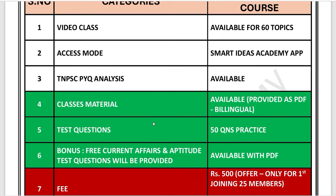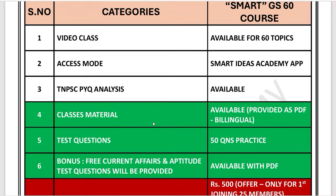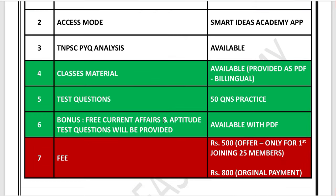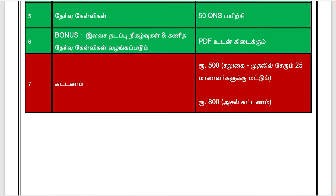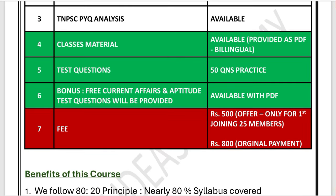We are doing GS practice for current affairs and aptitude. The test batch fee is 500 rupees. The real fee is 800 rupees, but for the first 25 members, it is 500 rupees.